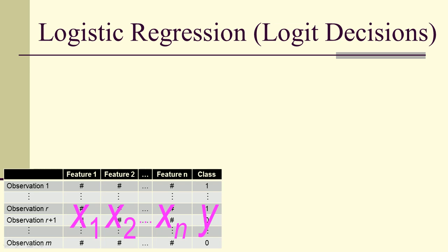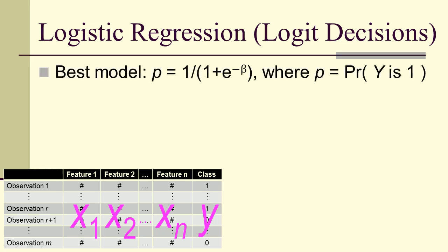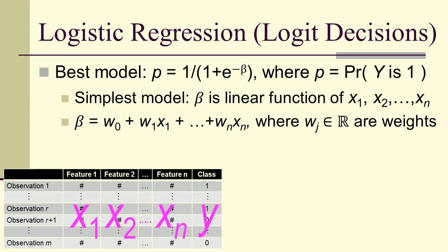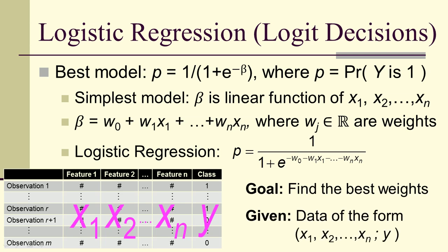So where does this lead us? Well, we have logistic regression. The best model is P equals 1 over 1 plus e to the negative beta, where P is the probability of y is 1. The simplest model is where beta is a linear function of x1 to xn. And we're going to make the assumption, that is, that beta is equal to this linear combination of the x's. The w sub j are weights, and the w sub 0 is just a constant out there by itself. And then logistic regression is where the probability has this form. In other words, where we study these kinds of models.